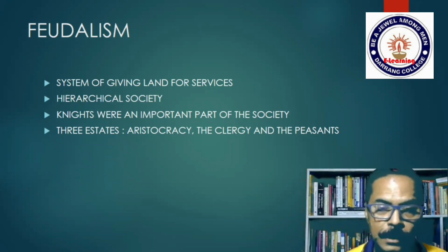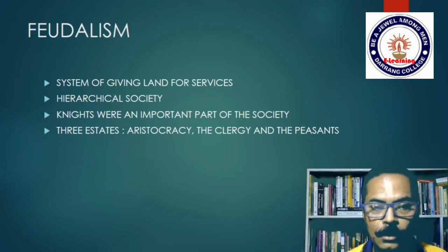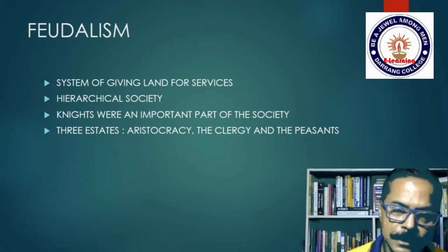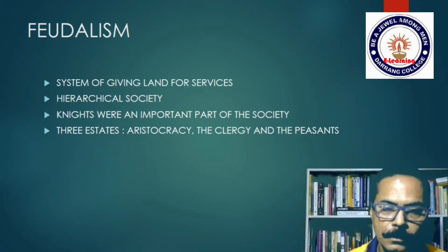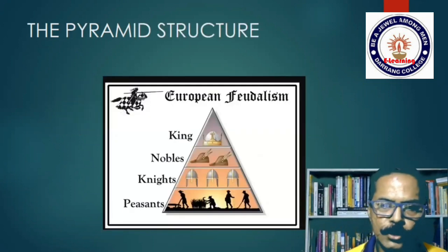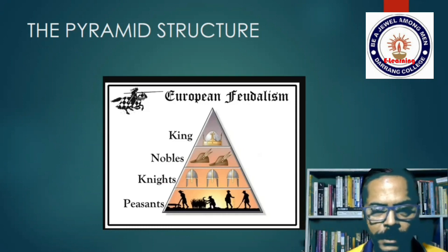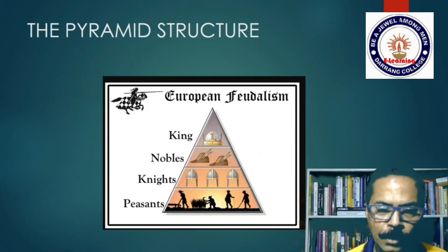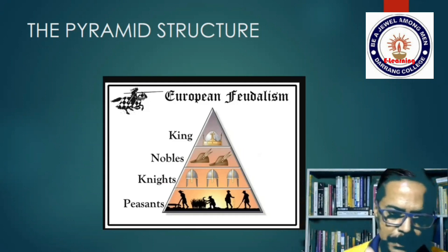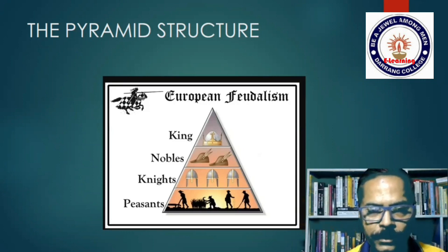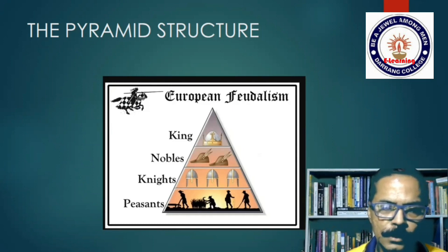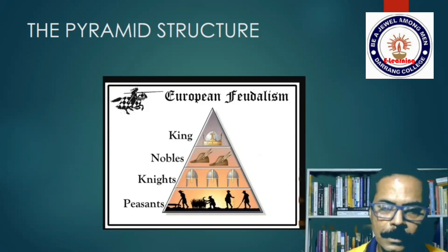The three estates of feudal society are: the aristocracy — consisting of the king and the lords; the clergy — priests and people associated with the church; and the common people — the peasants. A feudal society is described as pyramid-like in structure. At the top is the king; at the bottom are the serfs. The king distributes land to nobles, nobles to knights, and knights to peasants, who offer services back up the hierarchy.